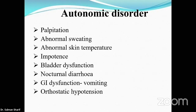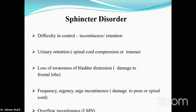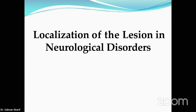Autonomic disorders are also important — a patient with seizures may present with sweating, and different lesion areas produce different auras. Sphincter control is critical: spinal cord compression or trauma may cause urinary retention; frontal lobe damage may cause loss of awareness of bladder distension; pons or spinal cord lesions may present with frequency, urgency, or urge incontinence; lower motor neuron palsy can present as overflow incontinence.